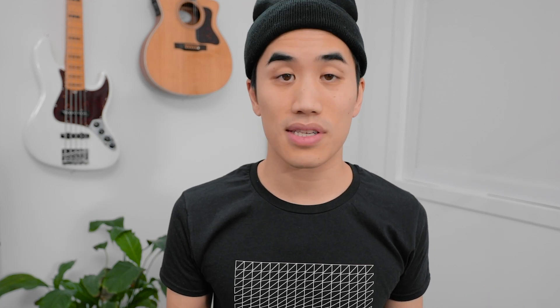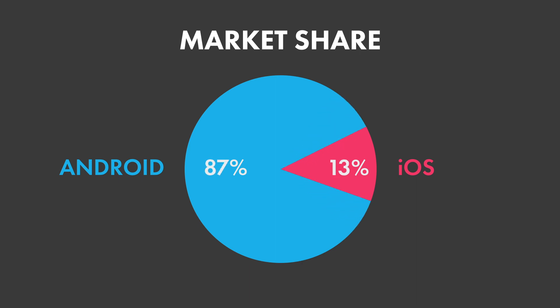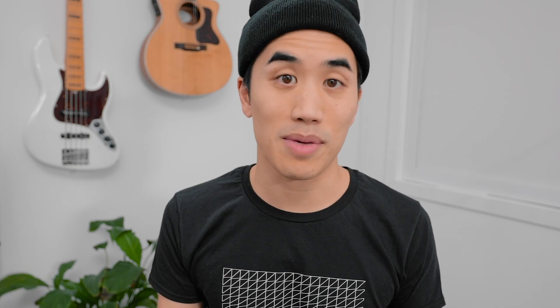The next thing we'll look at is the popularity of devices. Android is by far the more popular platform. Estimates have it at around 80% of the market share, and in my research I saw figures as low as 73% and as high as 87%, so you would think it would make better business sense to develop a product for the platform that more people are on. But those numbers don't tell the whole story because of fragmentation.